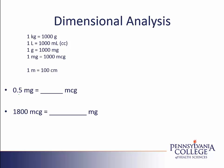For our first example, we have a starting point of 0.5 milligrams. In dimensional analysis, I'll write that over 1 as a placeholder. Next, I want to cancel the milligrams, so milligrams will go on the bottom. Looking at my memorized conversion, 1 milligram is 1,000 micrograms. The milligram label cancels, and I do the math: 0.5 times 1,000, giving an answer of 500 micrograms.